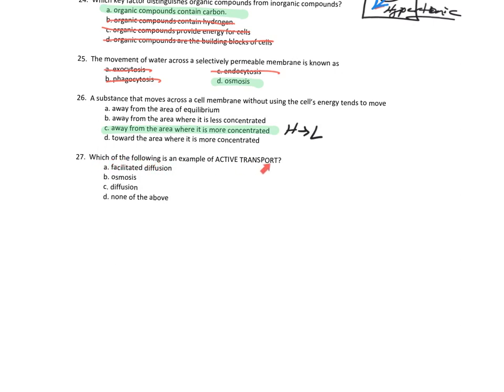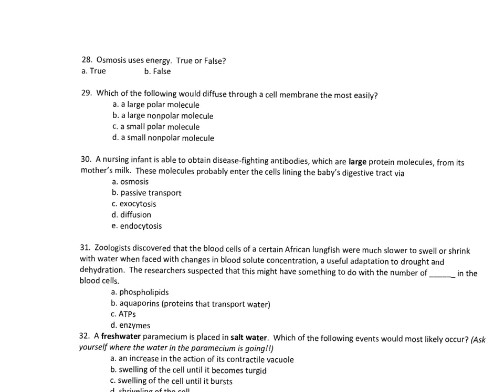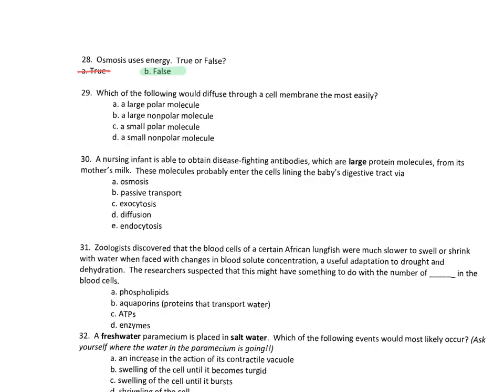Which of the following is an example of active transport? None of the above — all of these are passive transport. Facilitated diffusion is passive. Osmosis is passive. Diffusion is passive. None of these are active. Osmosis uses energy — true or false? False. Easily. Those of you overthinking it are thinking there is energy being used when molecules are moving — yes, you're right. But what are they talking about? Extra energy. Don't mess that up. These are questions the state and the ACT and SAT ask.